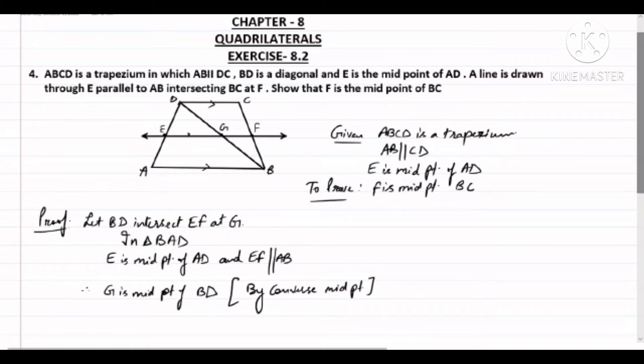Similarly, also in triangle BDC, G is the midpoint of BD. And if EF is parallel to AB, then EF will also be parallel to CD. So I can write GF parallel to CD also. Then again, by converse of midpoint theorem, F is the midpoint of BC. This is what I needed to prove.